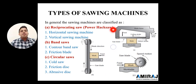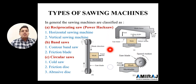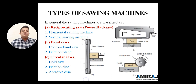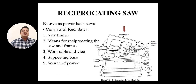To recap: first is the reciprocating saw, having two types — horizontal sawing machine and vertical sawing machine. Second is the band saw — contour band saw and friction band blade. Third is the circular saw — cold saw, friction disc, and abrasive disc. Now let's learn all these types in detail, starting with the reciprocating saw.